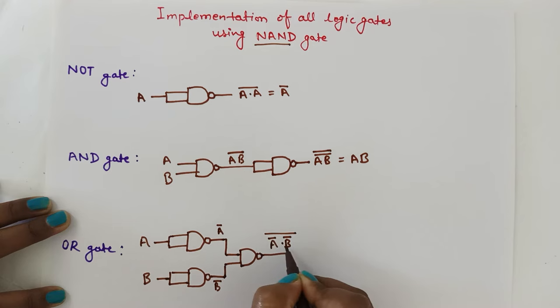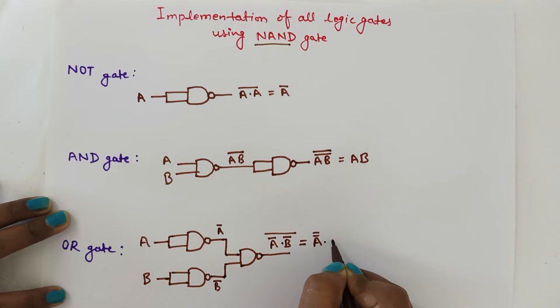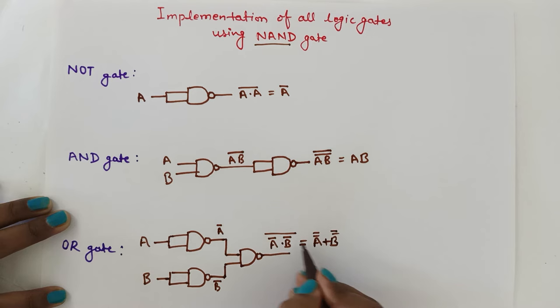So the result will be A bar dot B bar, whole bar. This will become A double bar plus B double bar using De Morgan's law.